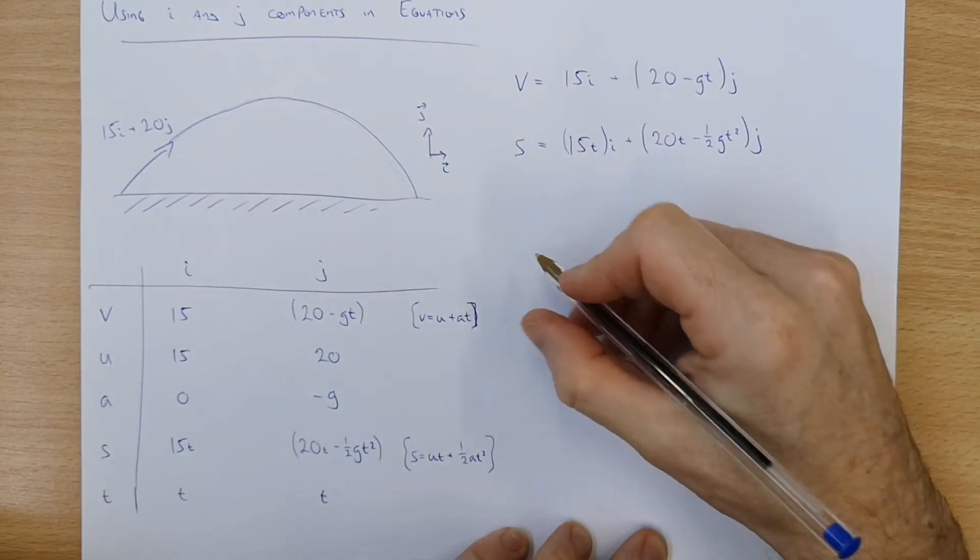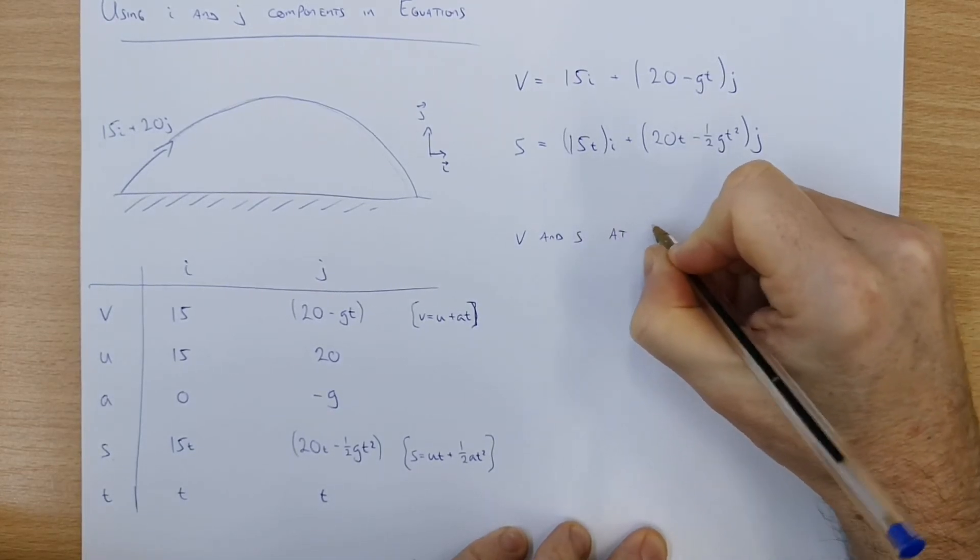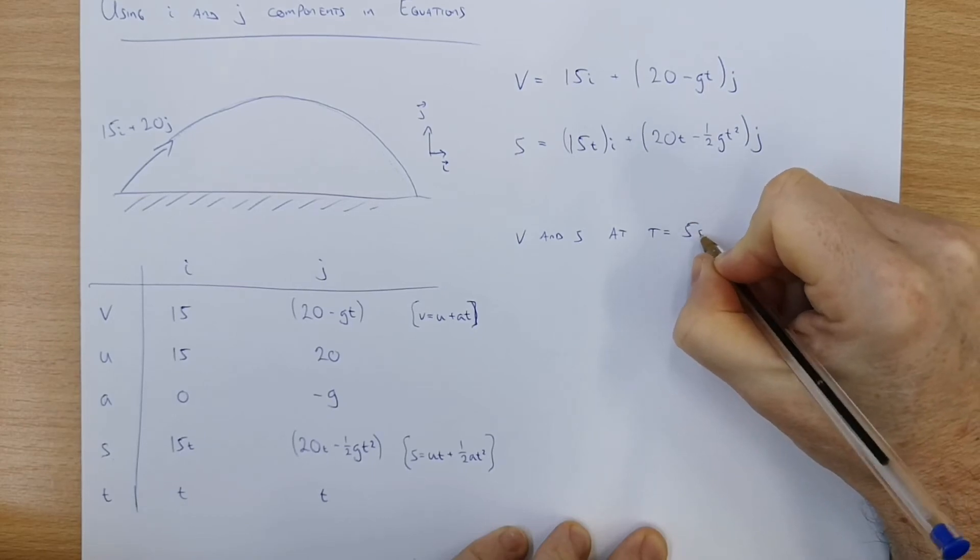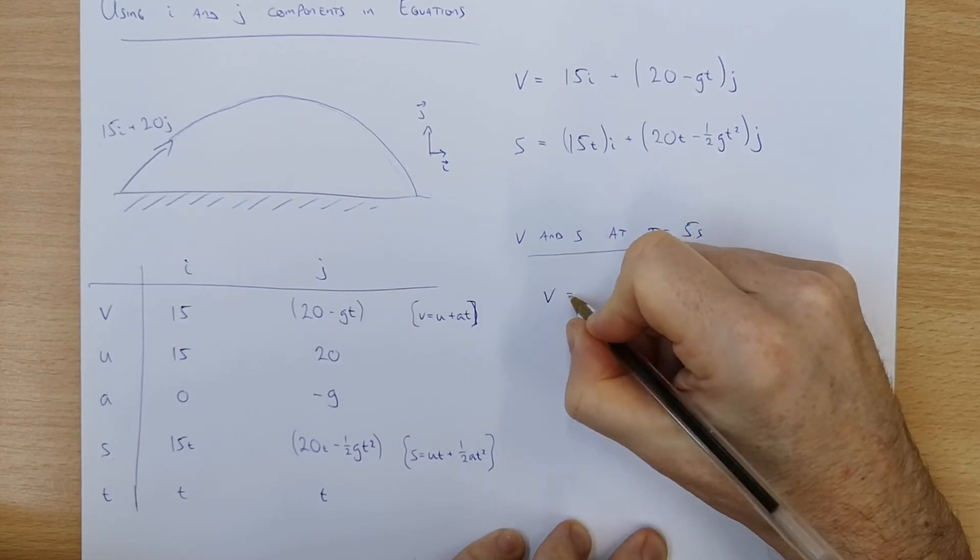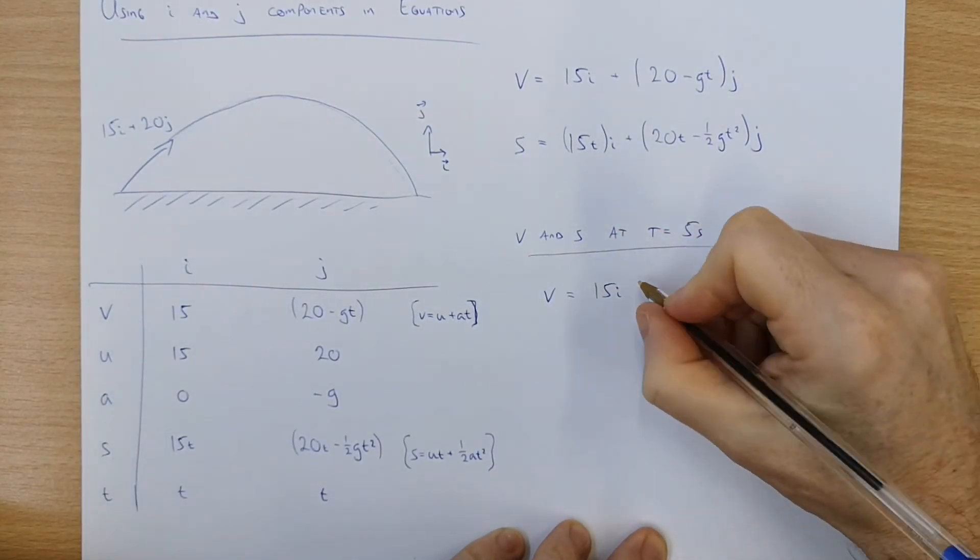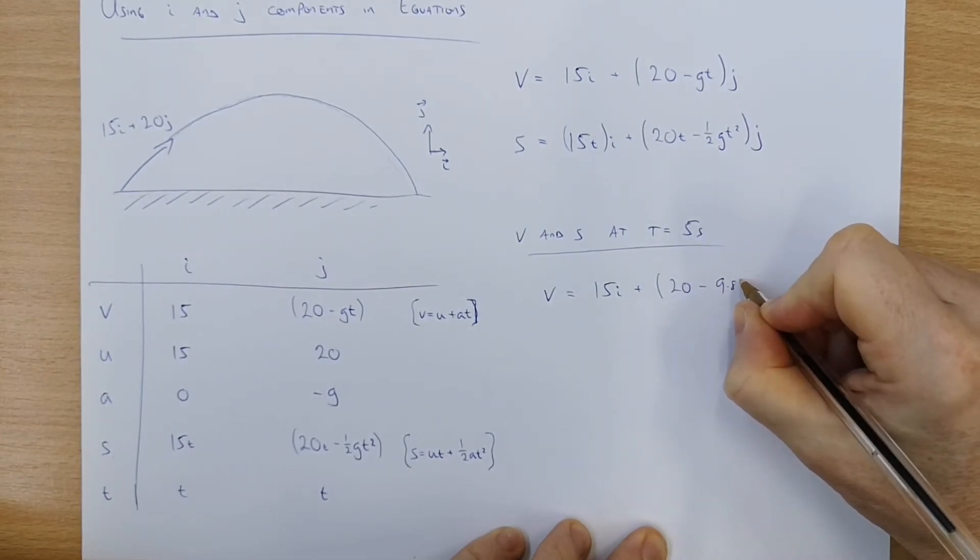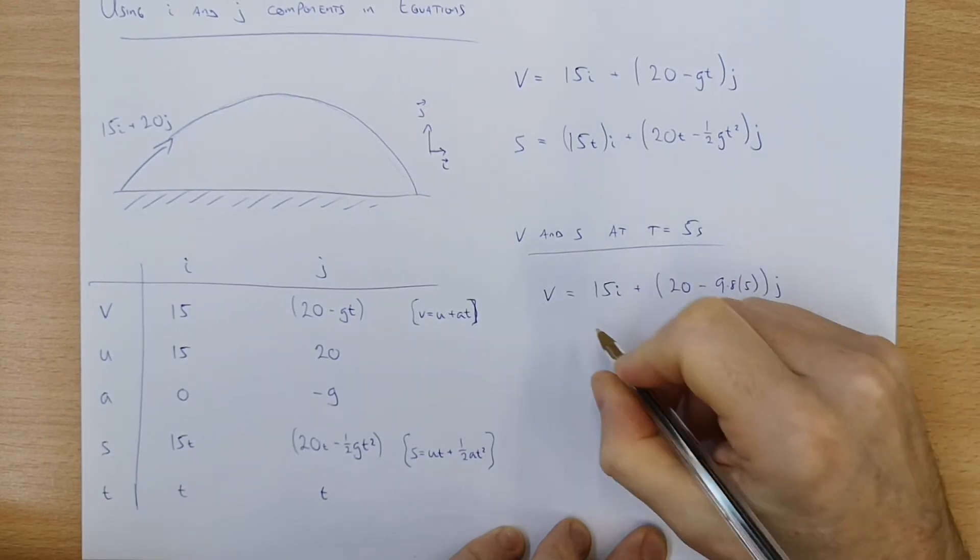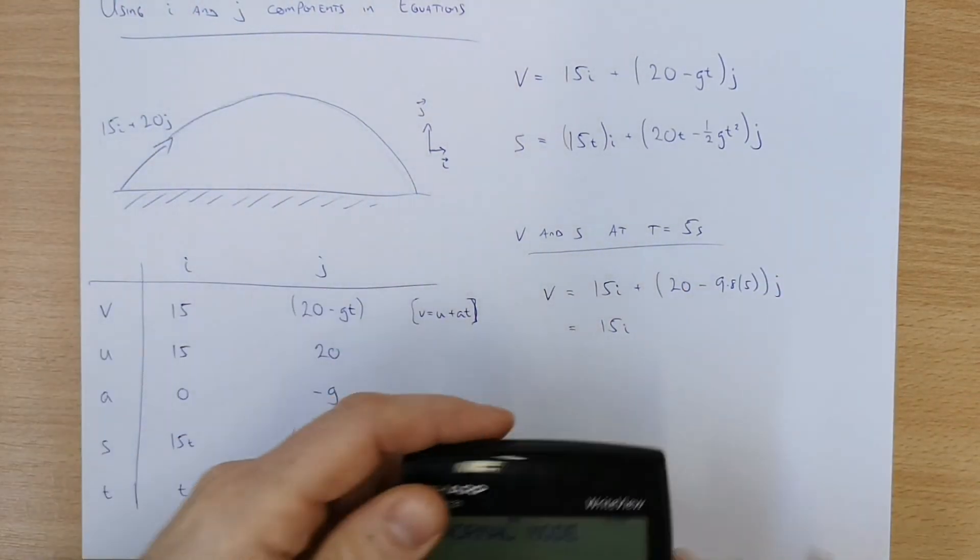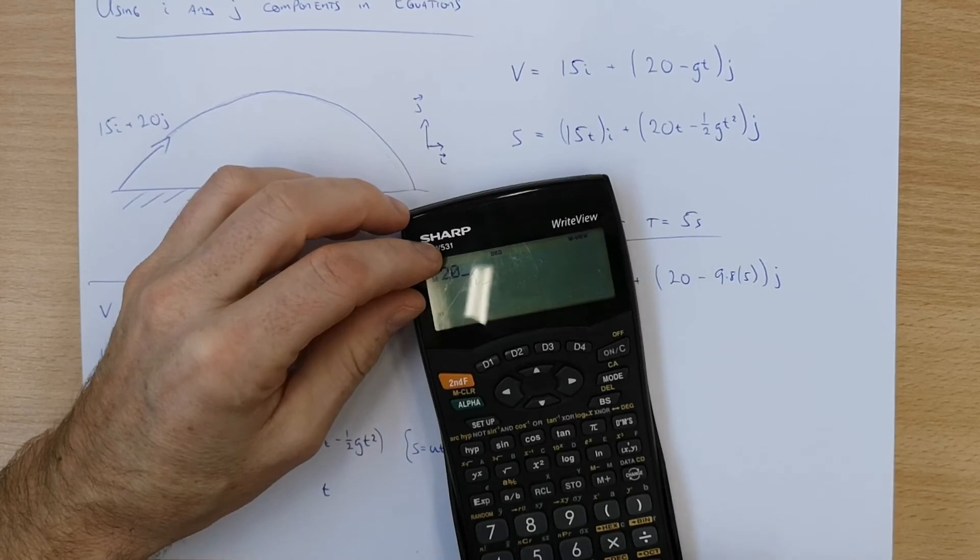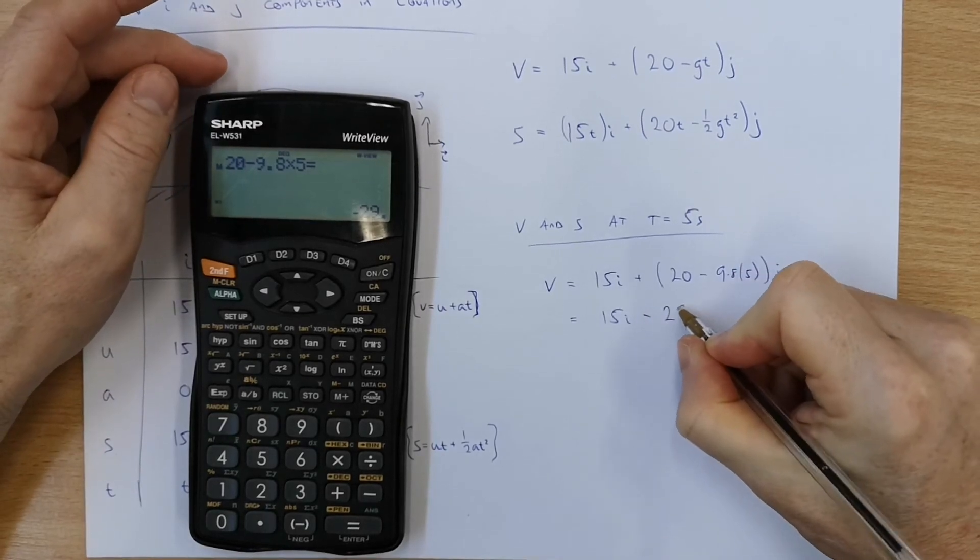Now let's just take a moment to look at a worked example. What about v and s at time equal to 5 seconds. So let's put these in. The velocity is 15i because that hasn't changed no matter what time it is. Plus 20 minus 9.8 by 5 in the j direction. That just equals 15i. Let's see what that comes out to. Minus 29j.